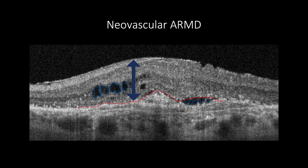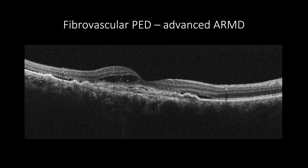Neovascular AMD is presented with CNV in the form of pigment epithelial detachment or subretinal hyperreflective amorphous material. CNV type 1, or what is called occult CNV, features fibrovascular pigment epithelial detachment, PED, which has a regular RPE elevation with increased reflectivity of Bruch's membrane, forming a double-layered sign.